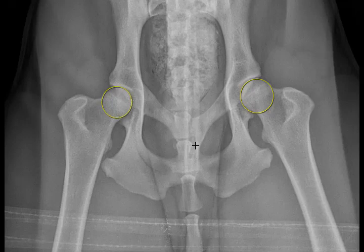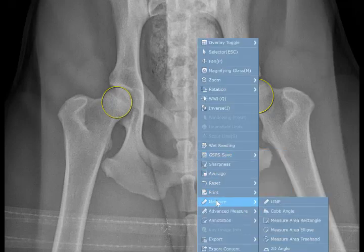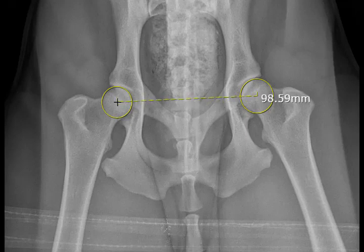Once we have that, we're going to right-click again, pick up our measurement tool, and draw a line. In this case, we're going to start this line from the center of each of these circles and connect them — so from the center of one femoral head to the other.